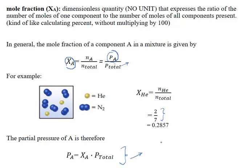The nitrogen in this case will make up the rest. The mole fraction for nitrogen could be calculated individually by doing the individual moles divided by the total. But we also know that the mole fractions of all of the gases sum to 1, much like the total percentage of all items equals 100. So the mole fraction for nitrogen is 0.7143, which is the fraction that nitrogen contributes to the total pressure.